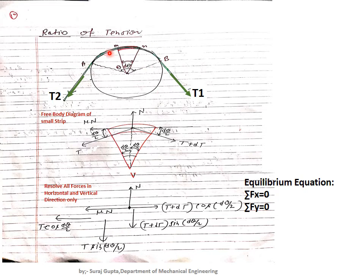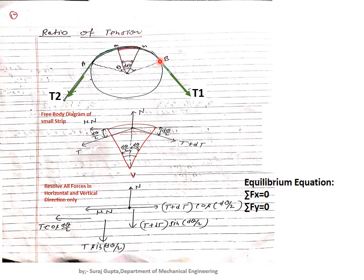Now we will derive the equation for the ratio of tensions. Consider a pulley with a belt having tension T₁ on one side and T₂ on the other, with contact angle θ. We take a small strip MN at angle dθ. Tension varies from T₂ at point A to T₁ at point B, as the angle goes from 0 to θ. At point M the tension is T, and at point N it is T + dT.